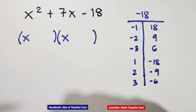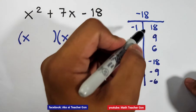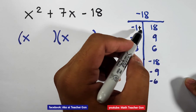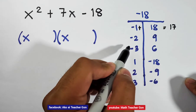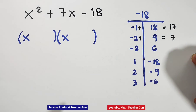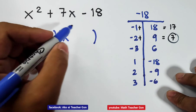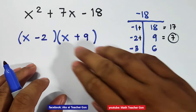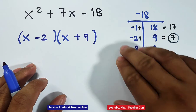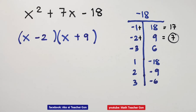Among the 6 pairs of factors, which one will produce positive 7? When we add: negative 1 plus 18, that is 17. Negative 2 plus 9, that is equal to 7. And as you can see, we already have positive 7. Meaning we're going to use negative 2 and positive 9. So the factors of x squared plus 7x minus 18 is simply x minus 2 times x plus 9. Now let's move on to the last example.